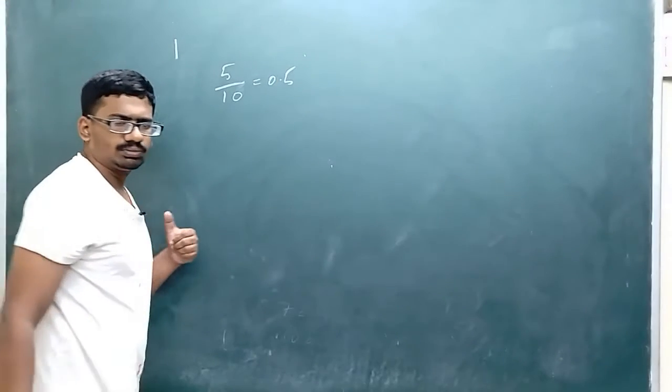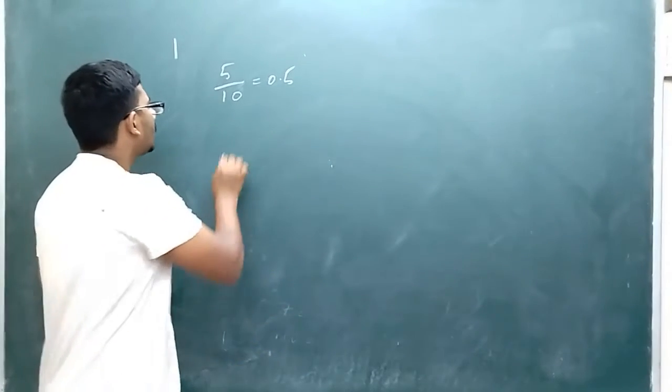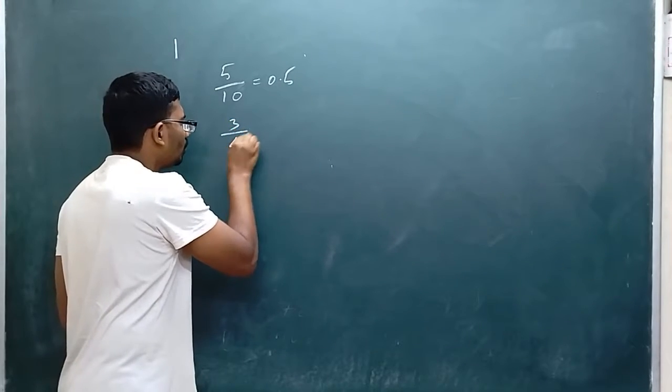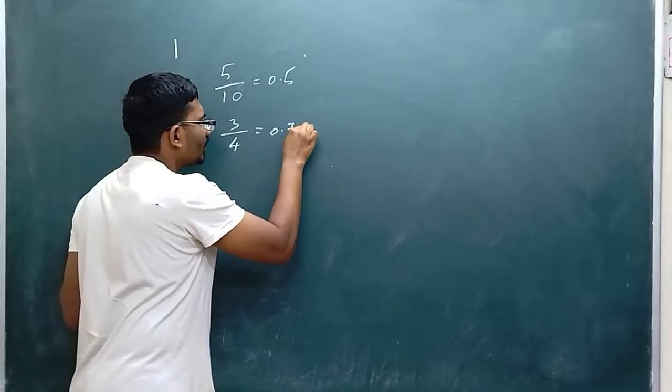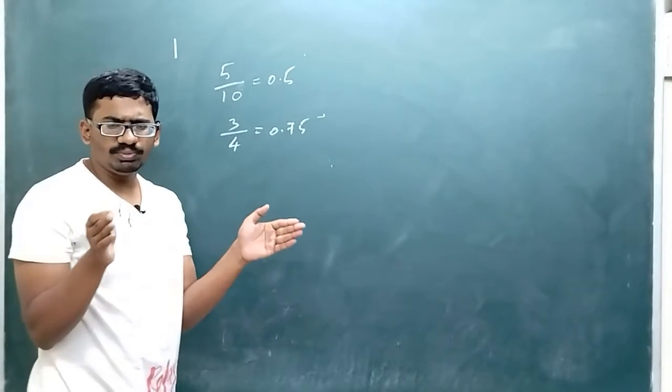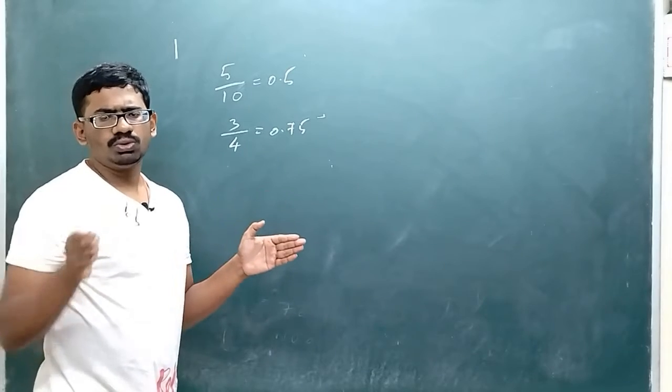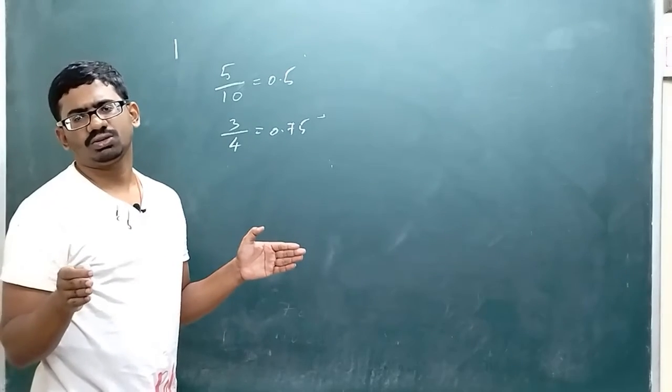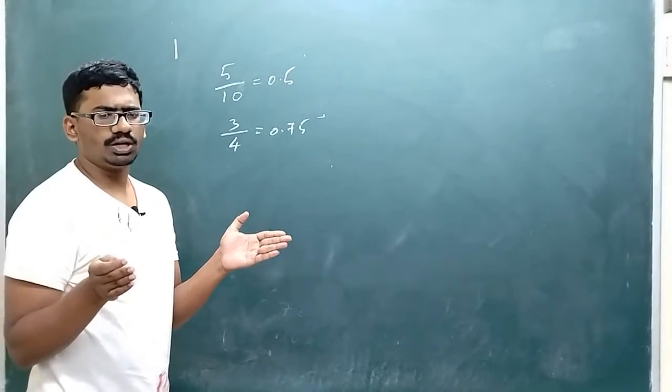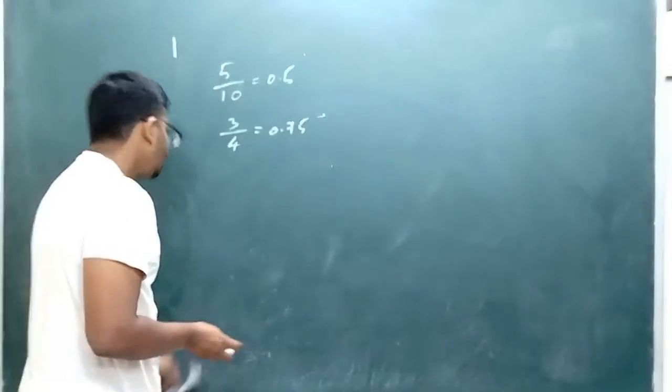Take another number: 3/4, which is 0.75. The answer will always be less than one, between 0.1 to 0.99. When you get answers like this, it is said to be a proper fraction.